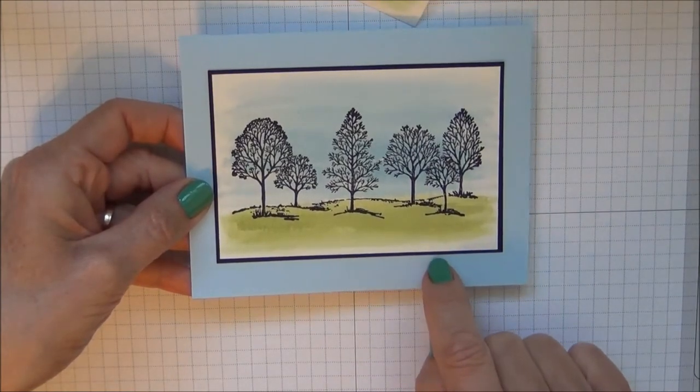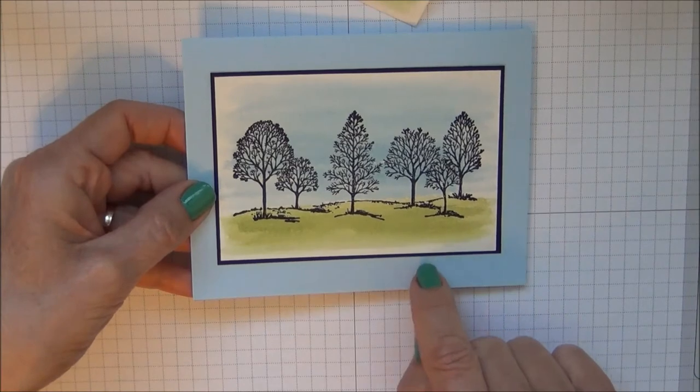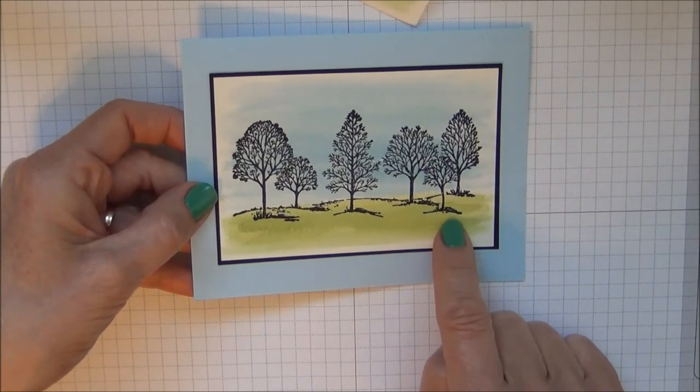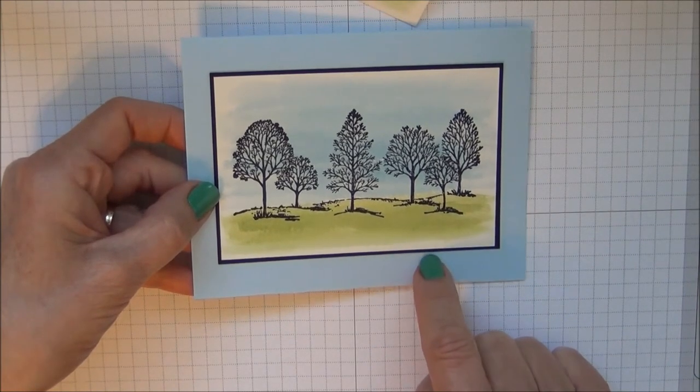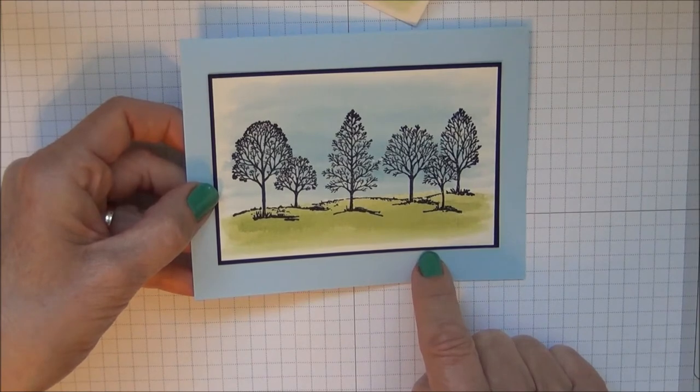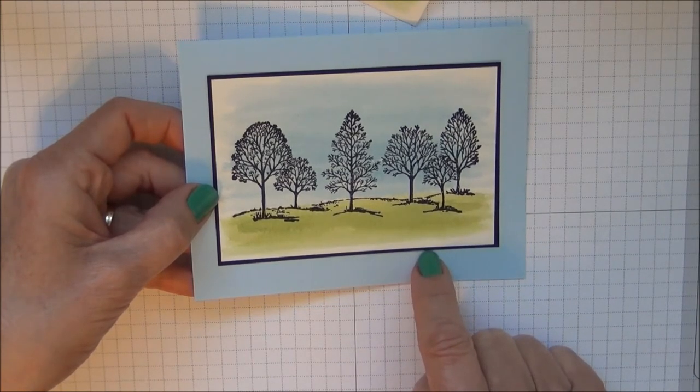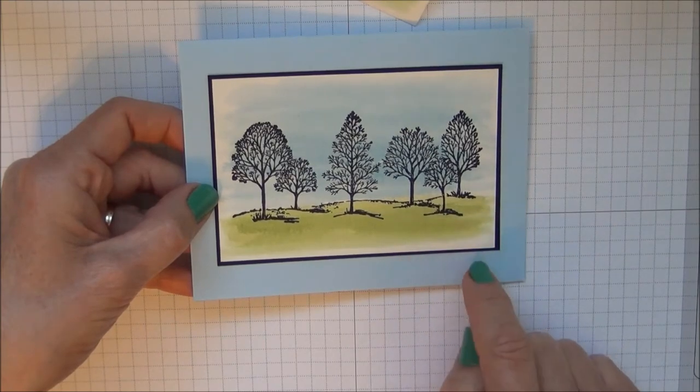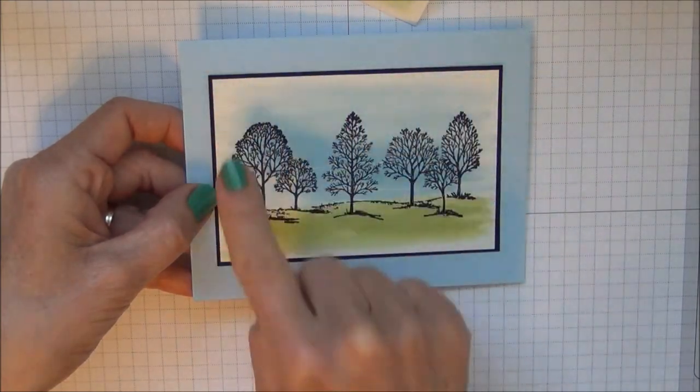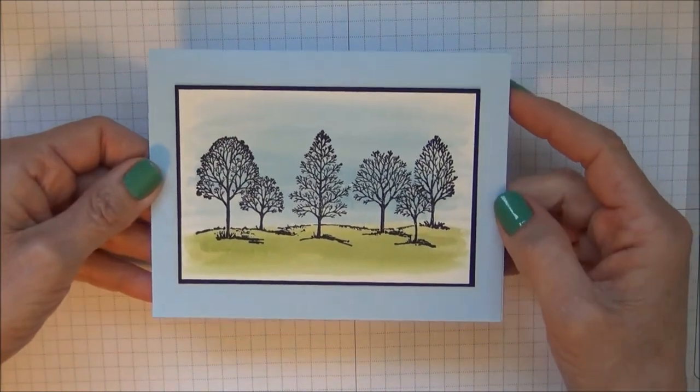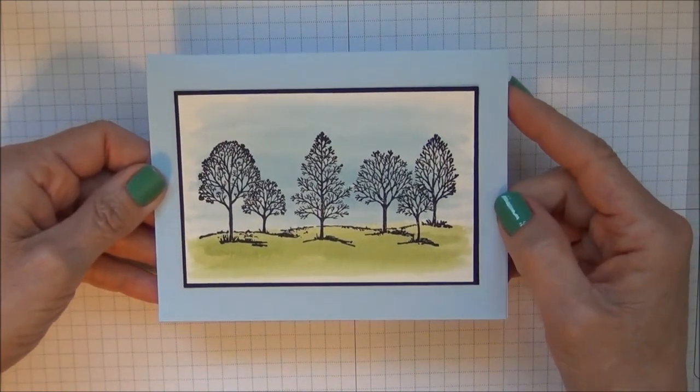I did layer it onto basic black card stock and remember the watercolor paper is three by four and a half so I cut my black to three and one-eighth by four and five-eighths. I just want an eighth of an inch larger on each side so I have a tiny little border of black around the edges and then I layered this onto Bashful Blue card stock.